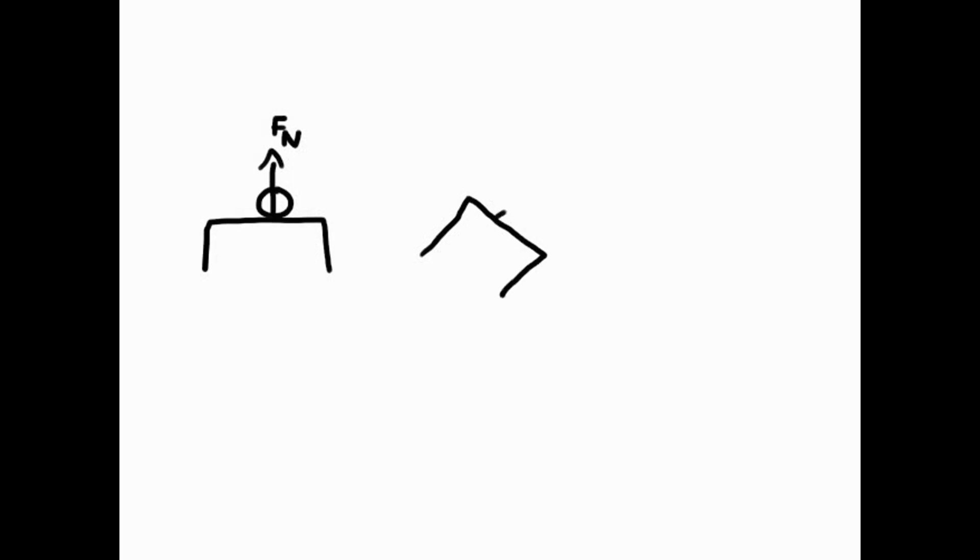And let's use the block as the example suggests. Now, when the table was like the table with the ball on top of it, there was the block. And the normal force, or Fn, there we go, it is still perpendicular to the surface, right angle.